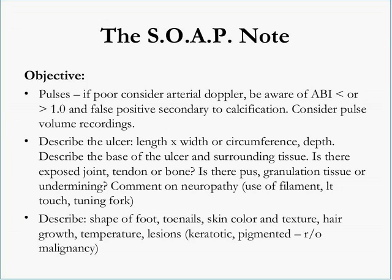One of the other things in the Objective portion — what the doctor sees, feels, and observes — would be describing the ulcer of a diabetic foot patient. Many rules and regulations come from Medicare, and other insurance companies are following suit. They would like the length and width, or the circumference and depth in centimeters and millimeters, and a description of the base of the ulcer — what it looks like and the surrounding tissue. Is there callus around it? Is it red, inflamed, swollen, or black? Is there any exposed joint, tendon, or bone in the ulcer? If that's the case, it's quite deep — through the subcutaneous tissue and fat. If bone is visible, you're through the joint capsule and obviously very deep.